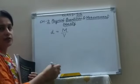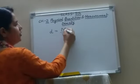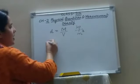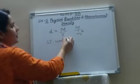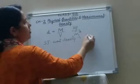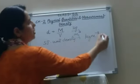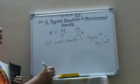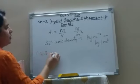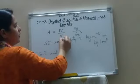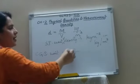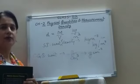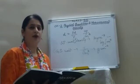Now how will you find the SI unit of density? The SI unit of mass is kilogram and the SI unit of volume is cubic meter. So the SI unit of density is kilogram per cubic meter. The CGS unit of mass is gram and the CGS unit of volume is cubic centimeter. So the CGS unit of density is gram per cubic centimeter.